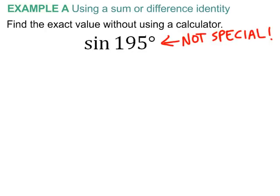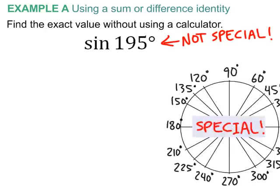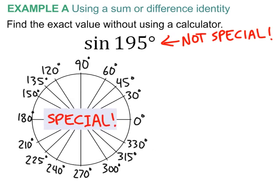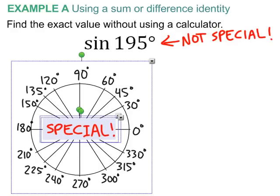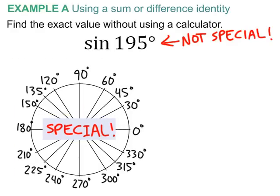the approach is that we consider our special angles and how 195 degrees may be expressed as the sum or difference of any two of those special angles. So please don't sit there copying this graphic down. I trust that you can come up with all these on your own. But again, think of which two special angles add up or subtract to 195 degrees.